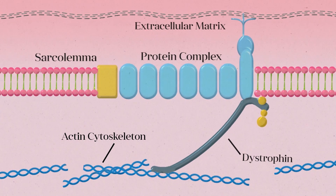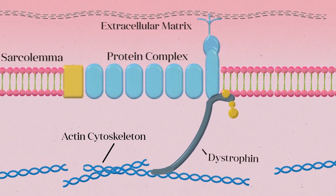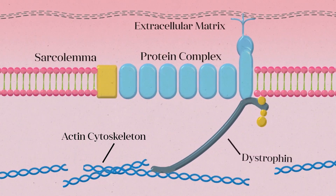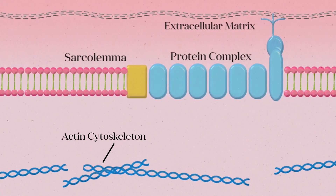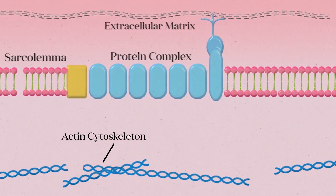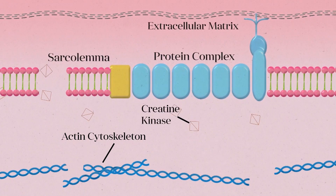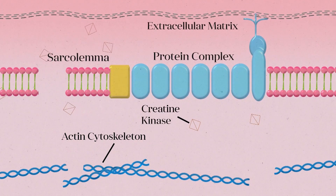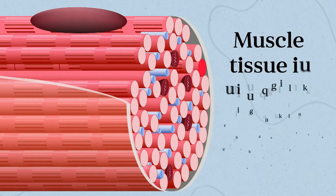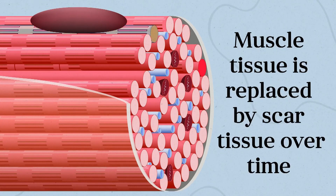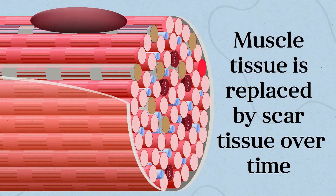Dystrophin acts like a shock absorber, helping to protect the sarcolemma from contraction-induced injury. In the absence of dystrophin, repetitive contractions damage the muscle fiber, which leaks creatine kinase and other intracellular components into the extracellular space. Without dystrophin, healthy muscle becomes progressively and irreparably damaged. The injured muscle tissue is replaced by scar tissue, which leads over time to the weakness and progressive decline in motor function seen in patients with DMD.